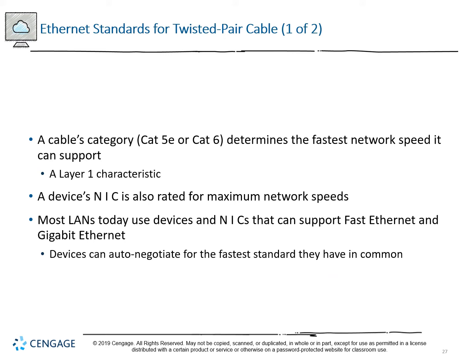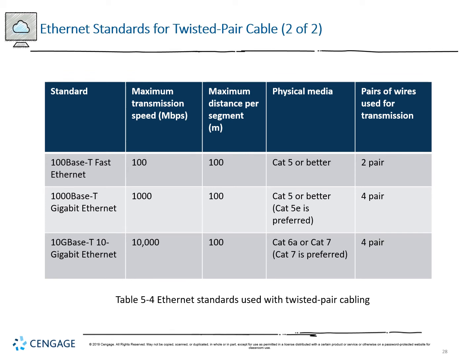For twisted pair cable, speed is determined at layer one and depends on the cable category. Using a Cat5 cable with a device capable of 100 gigabits won't work well; Cat6 or Cat7 will perform much better. A device's NIC is also a limiting factor with its maximum network speed. Most LANs today use fast Ethernet or gigabit — fast Ethernet tends to run just under a thousand megabits per second, around 700-800 range. Devices can auto-negotiate for the fastest standard they have in common. Common standards include 100BASE-T, 1000BASE-T, and 10GBASE-T, each with preferred cable types.